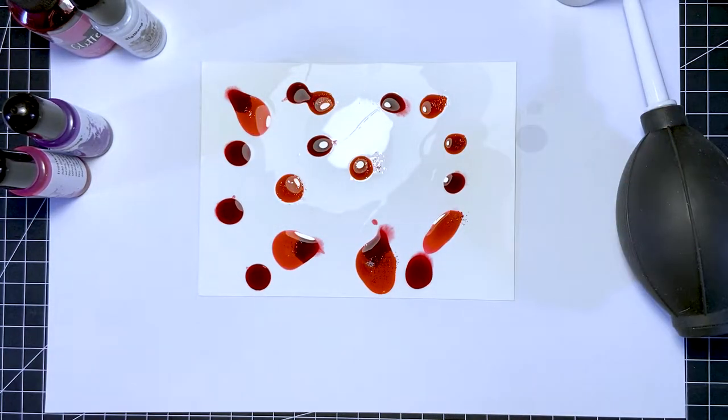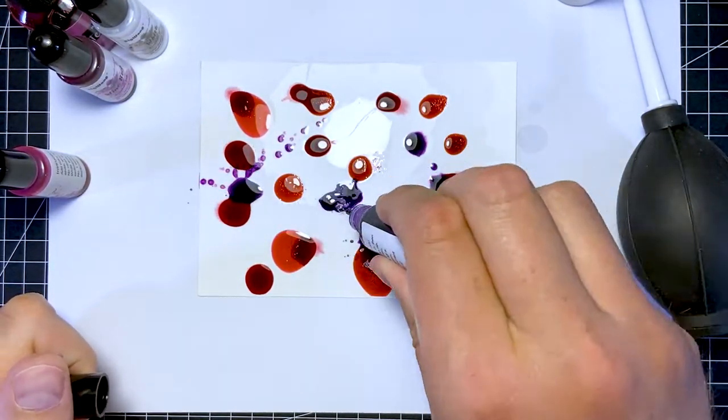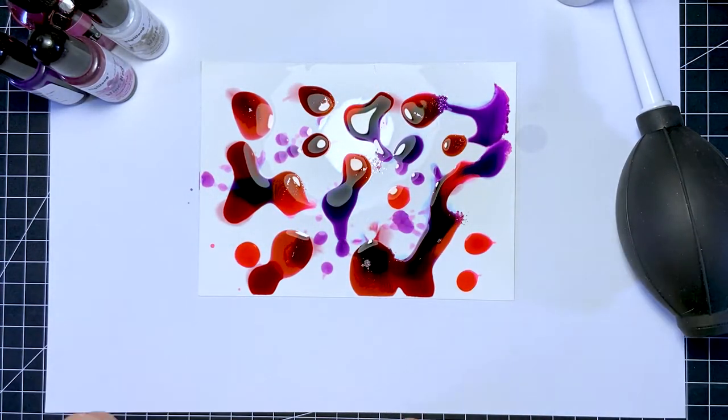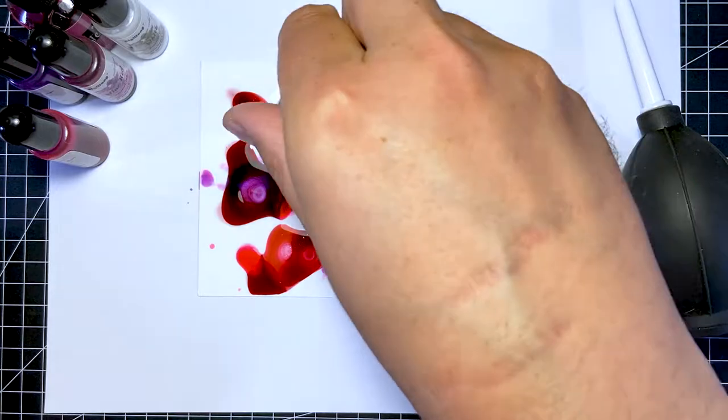Did you know you can make the blending solution yourself? It's much cheaper. Use a high percentage rubbing alcohol and add a few drops of glycerin. Shake it and you're done. This saves so much money.